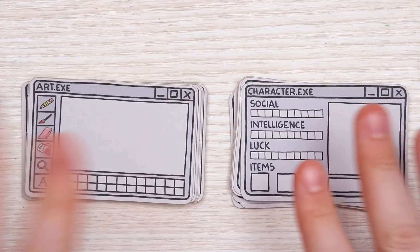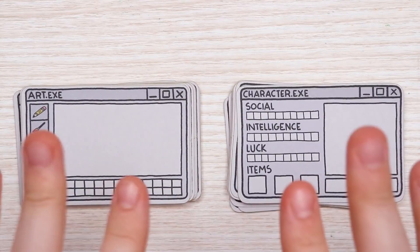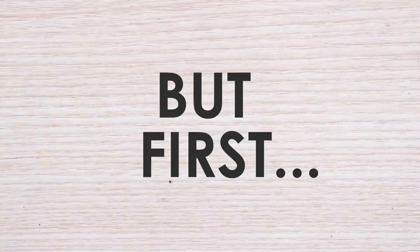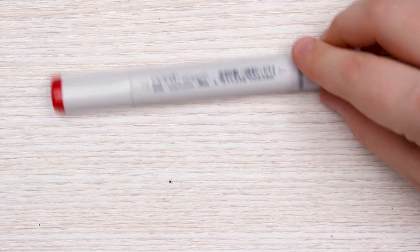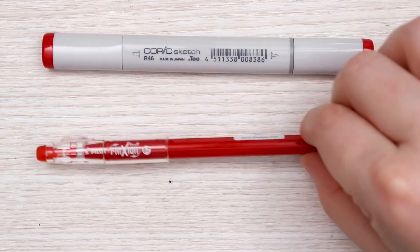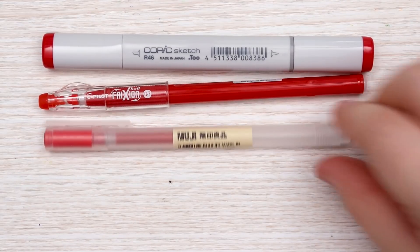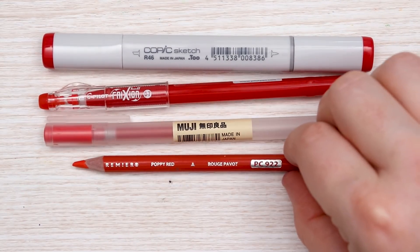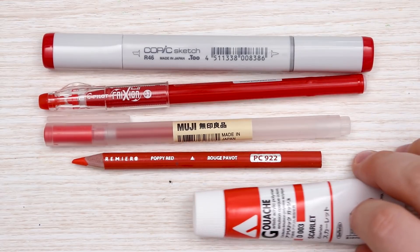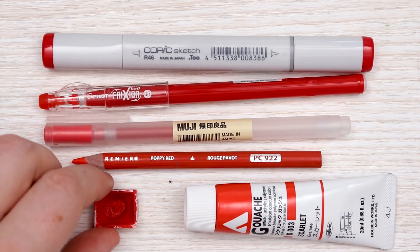I'm going to be creating a few of my own art.exe and character.exe stickers, but first I do want to swatch these and test different art supplies on these stickers to see what works best. Really quick we're going to test Copic markers, these friction erasable pens, these Muji ballpoint pens, some Prismacolor colored pencils, some acrylic gouache, and of course watercolor.